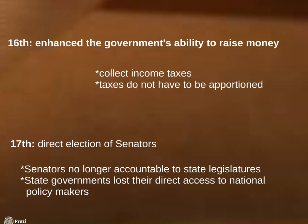Passage of the 16th Amendment in 1913 powerfully enhanced the ability of the national government to raise money. It guaranteed Congress the authority to collect income taxes from workers and corporations without apportioning those taxes among the states on the basis of population, which had been mandated by the Constitution before this amendment. The national government uses these resources to meet its constitutional responsibilities and also as leverage over state and local governments, encouraging or coercing them to pursue and implement policies that the national government thinks best.